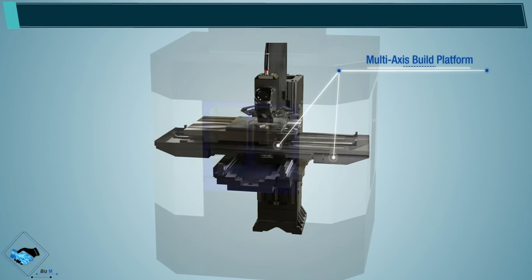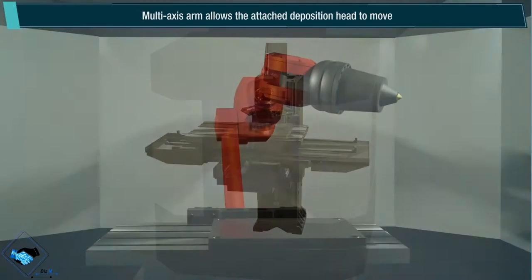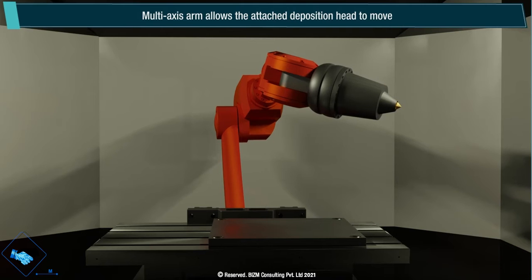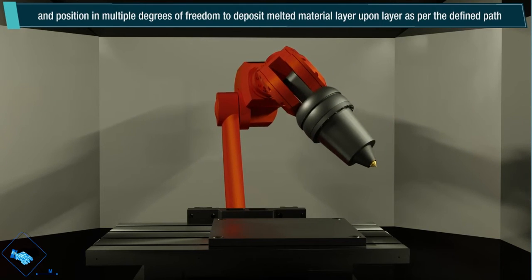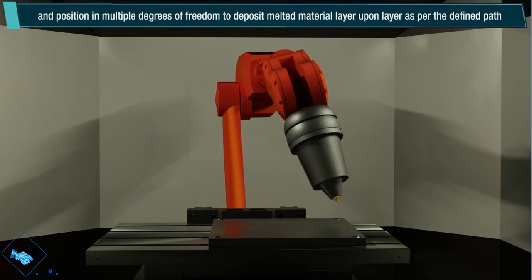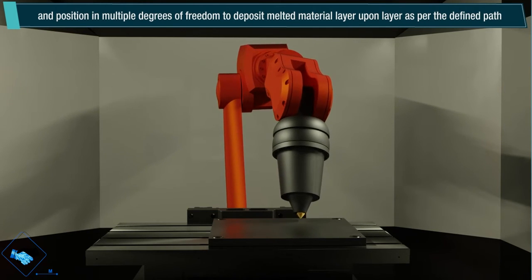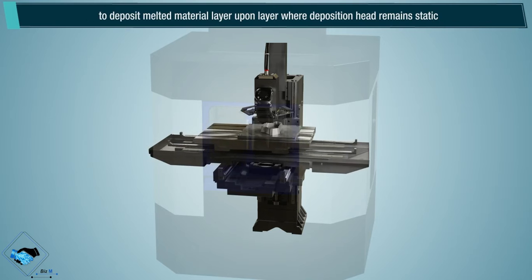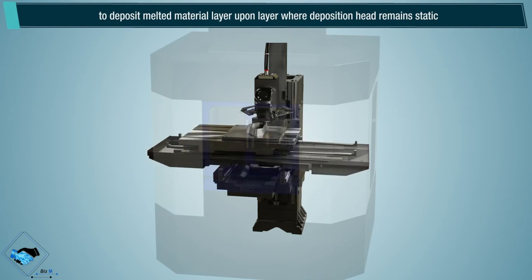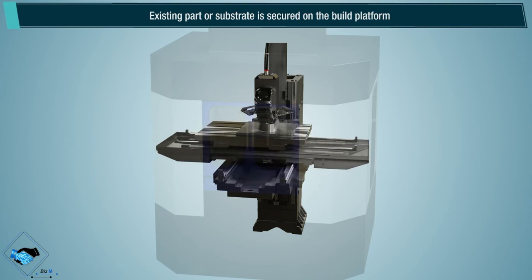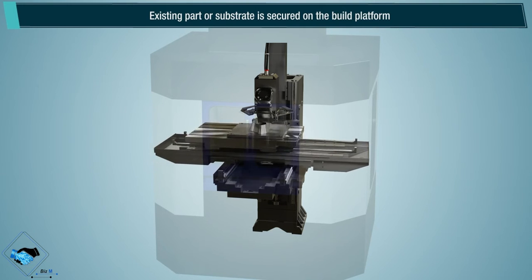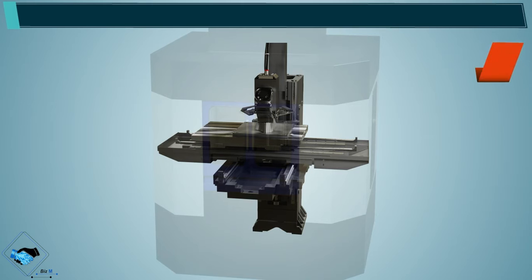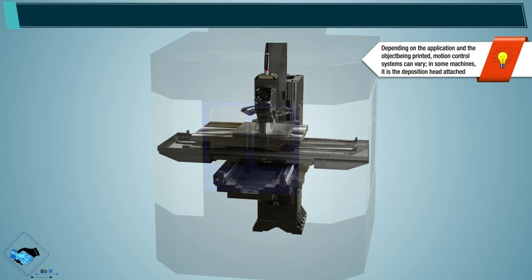A multi-axis arm allows the attached deposition head to move and position in multi-degree of freedom to deposit melted material layer upon layer as per the defined path. A multi-axis build platform allows the part or substrate to move and position in multi-degree of freedom to deposit melted material layer upon layer where the deposition head remains static. The existing part or substrate is secured on the build platform. Depending on the application and the object being printed, motion control systems can vary.